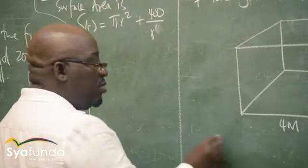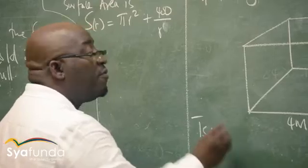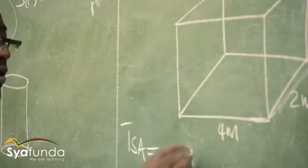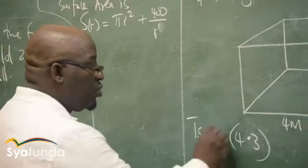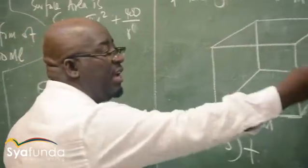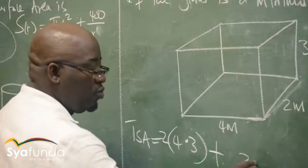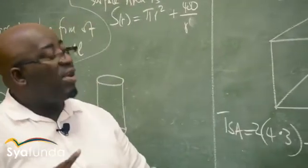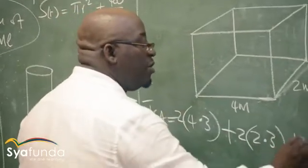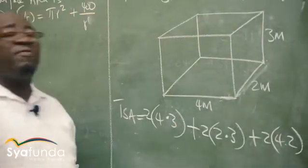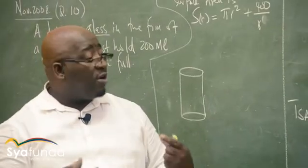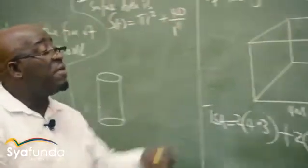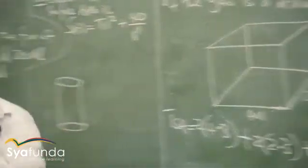The total surface area of this box will be this side, which is 4 times 3 — and since it's this side and that side, it's times 2. Plus this area, which is 2 times 3 — because it's this side and this side. If there was no lid, we look at the bottom: it is 4 times 2. If it has a lid, we multiply the top by 2 as well.